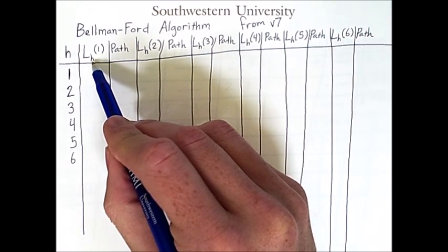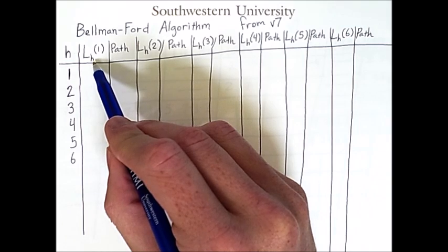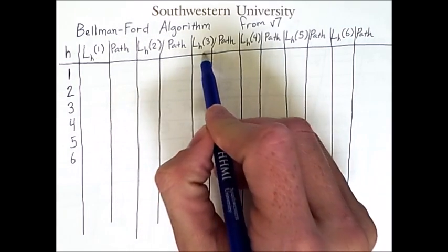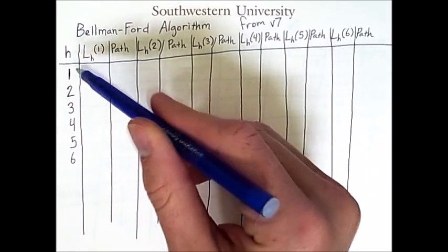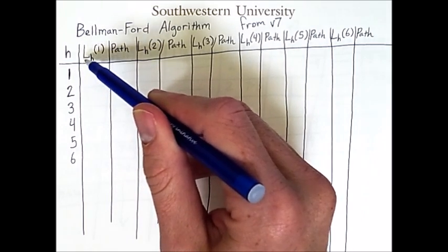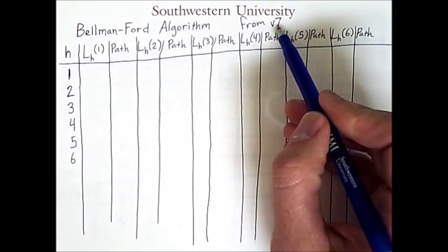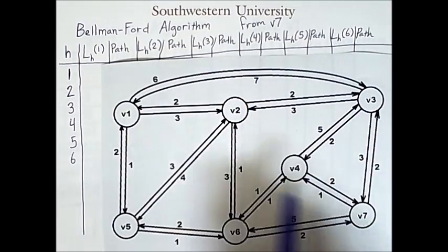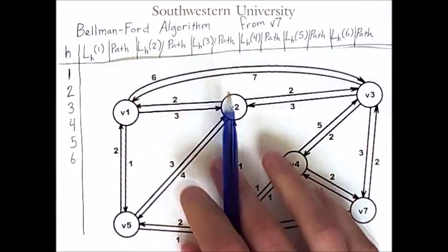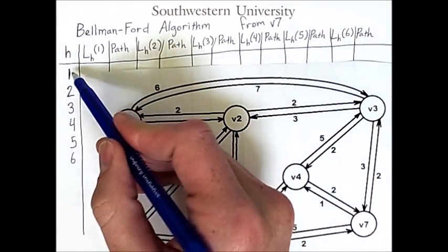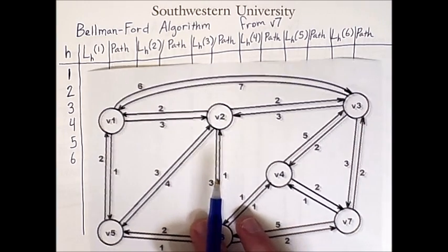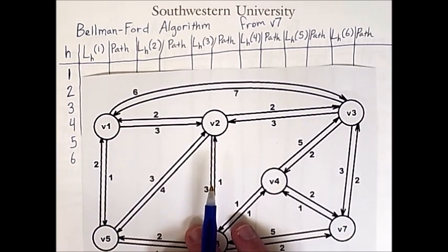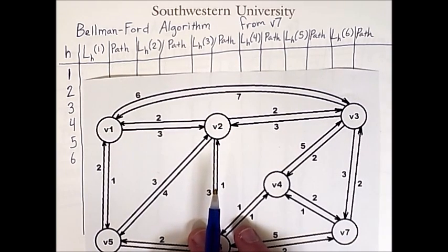Another difference between this algorithm and Dijkstra's algorithm is the presence of this subscript h in the length counts. This column indicates the length of a route from v7 to v1 using at most one hop. If no such path exists, we'll leave the length as infinite. Given that setup, let's step through the algorithm one row at a time.